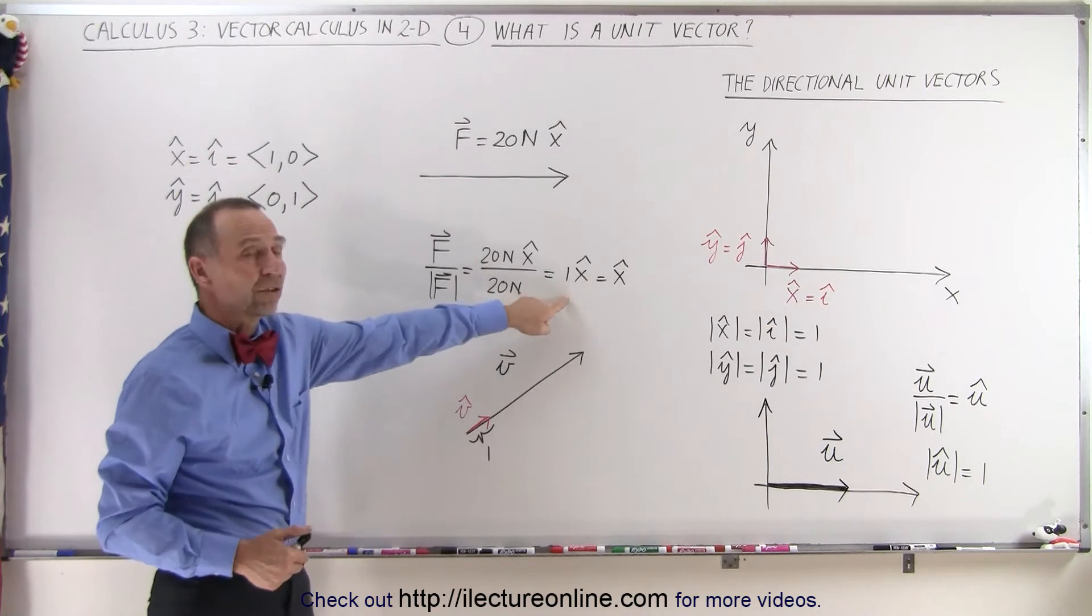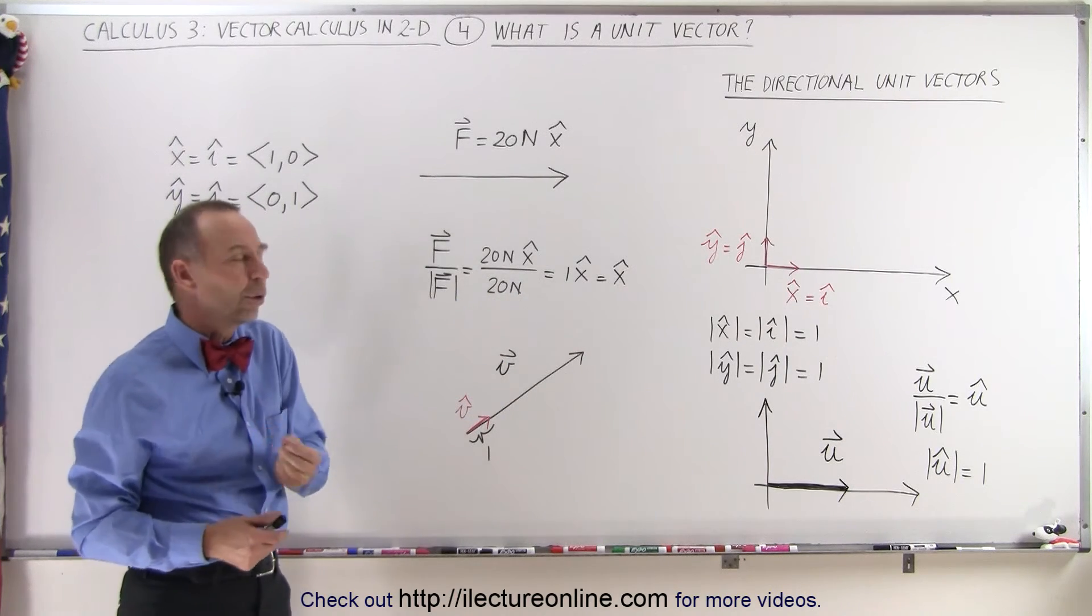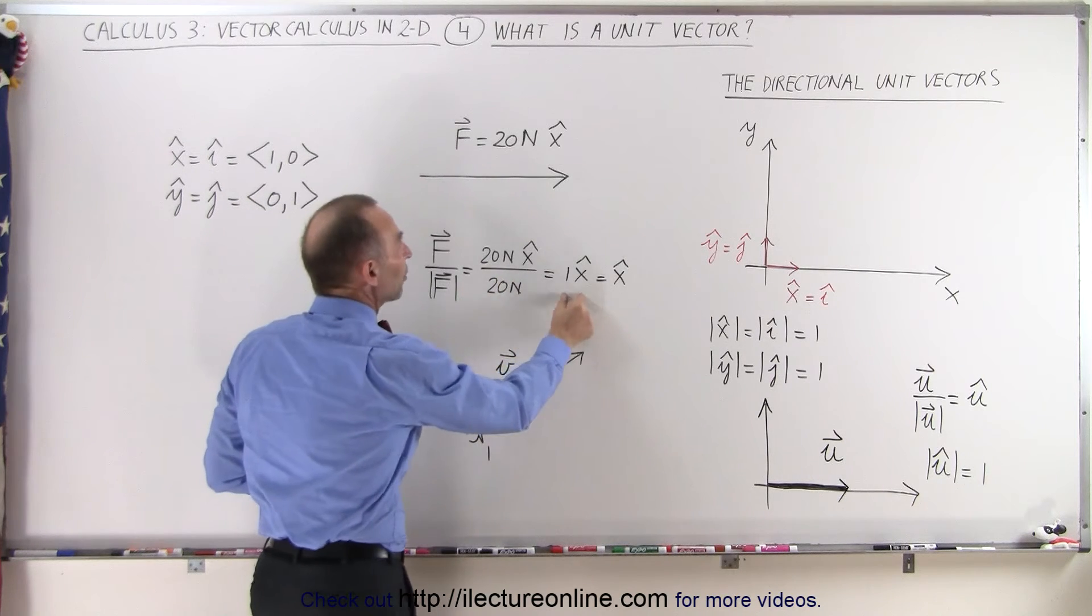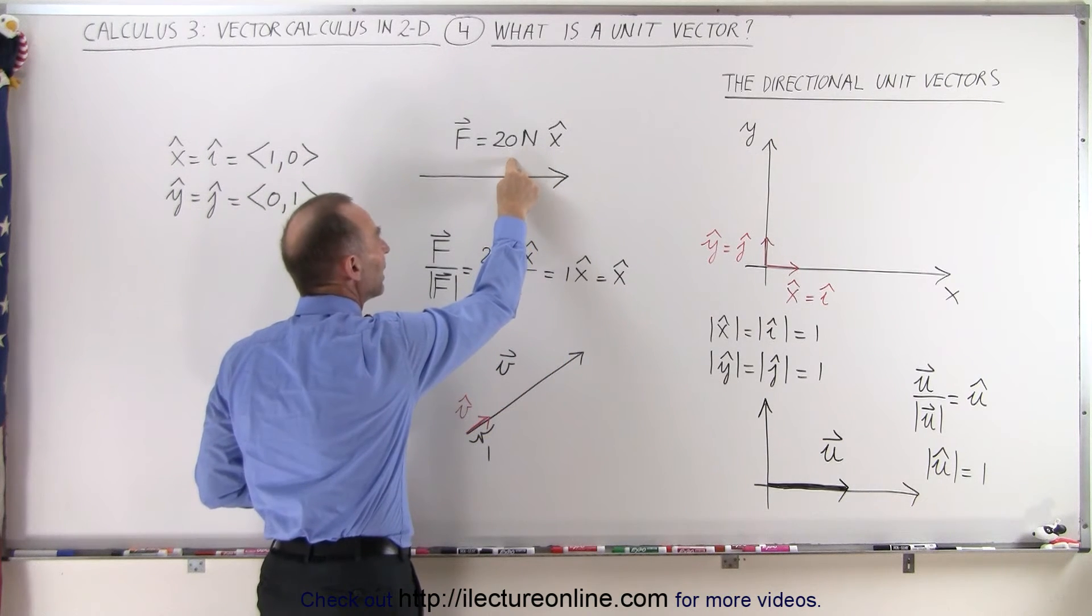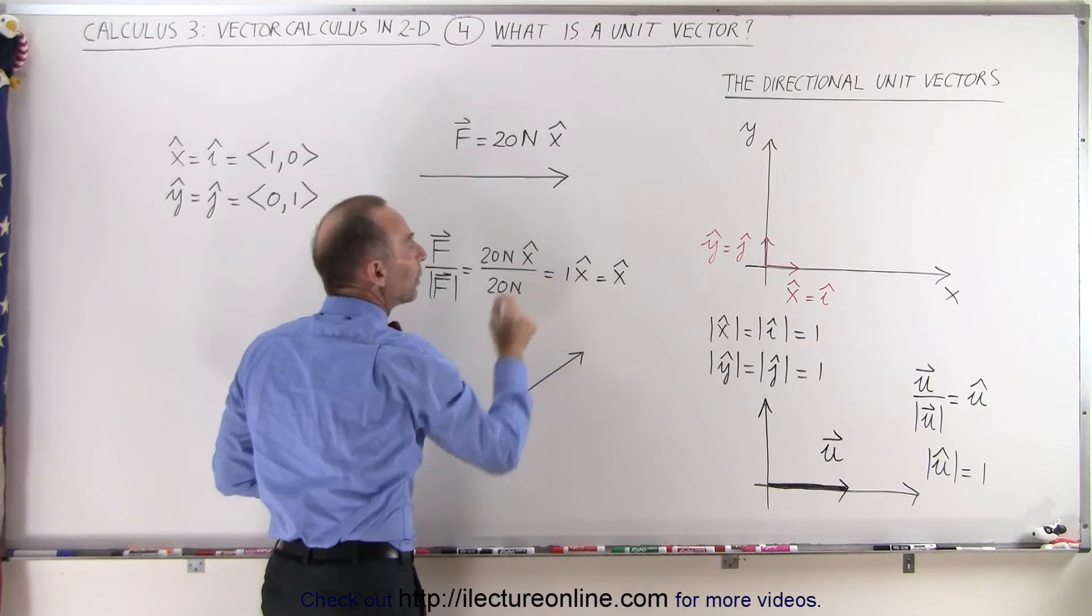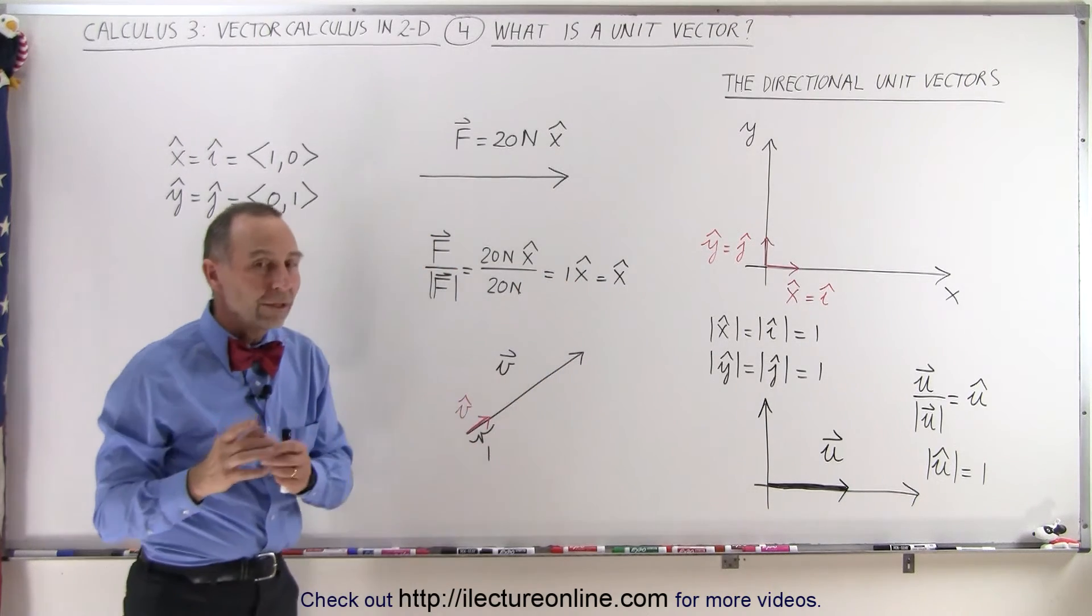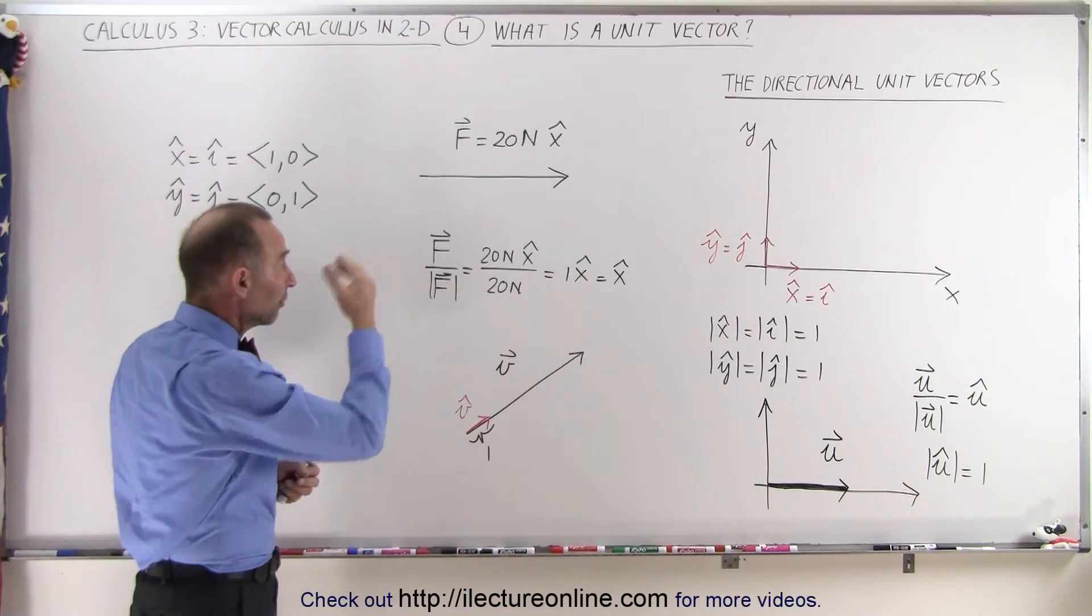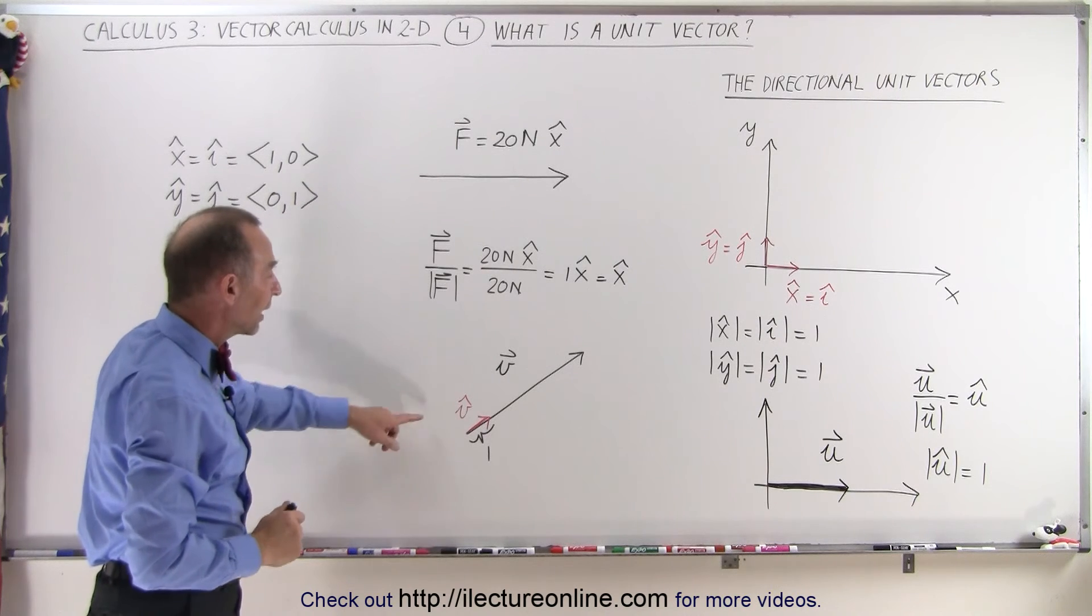In other words, unit vectors are unitless, even though they may represent a vector pointing in the same direction as the original quantity, but only with magnitude equal to 1. And we say 1, not 1 newton in the case of the vector representing a force.